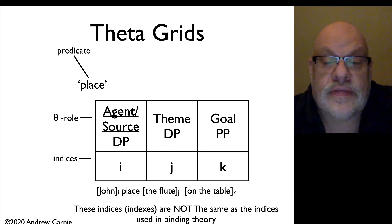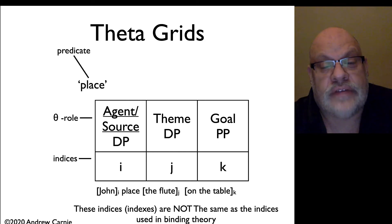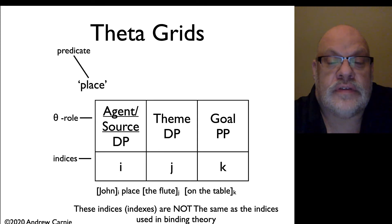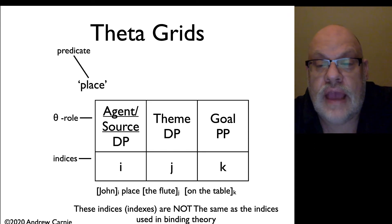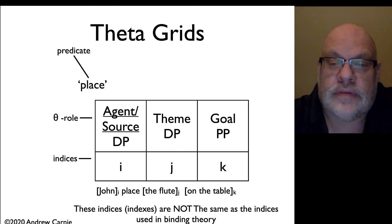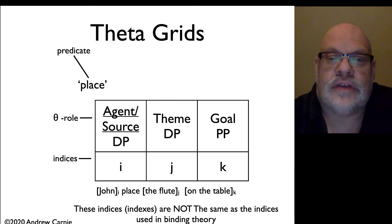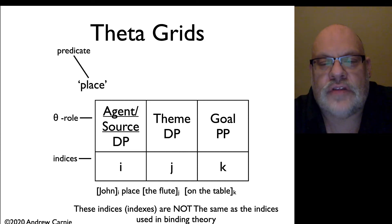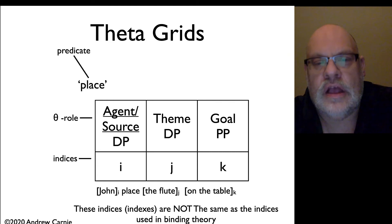The indices here are not the same as the indices used in binding theory. These are indices to indicate which theta role is assigned to which noun phrase in a sentence. So, the index i is associated with the agent, and that i is also on John. The theme is indicated by the index j, which goes on the flute. And the k is associated with the goal prepositional phrase — that's on the table. You'll notice that categories are mentioned in these theta grids. This is important because it gives us subcategorizational information — it ensures that John is a DP, the flute is a DP, and the goal is expressed in a prepositional phrase.